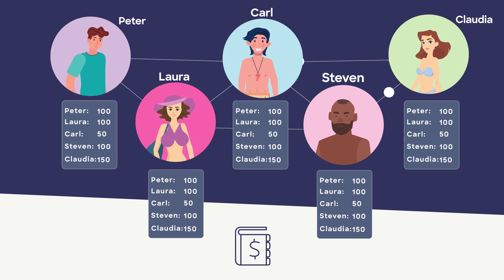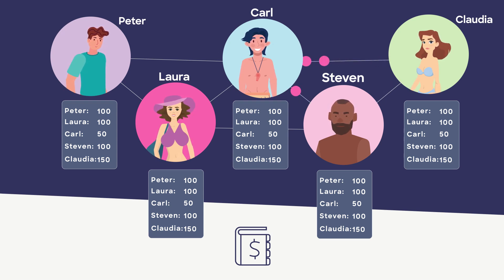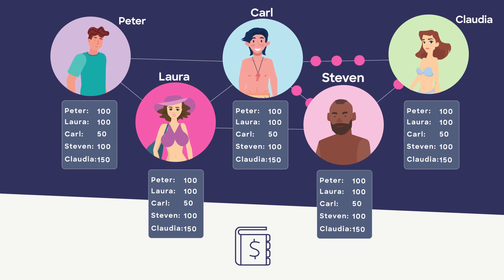Once any transaction is approved, we record it by creating a new block and adding it to the chain, like the new entry we added in our notebook.